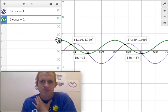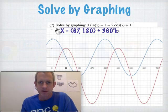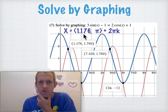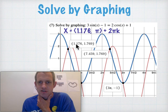instead of adding 360, we would add 2π. And so the final answer for this one would be this: 1.176 is this intersection and π is this intersection down here, plus 2πk.